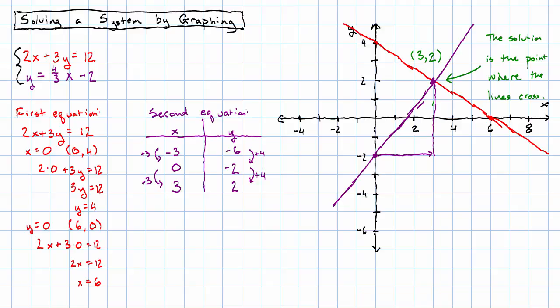That really works, right? 2 times 3 plus 3 times 2 really does add up to 12. And 2 really does equal 4 thirds times 3 minus 2.